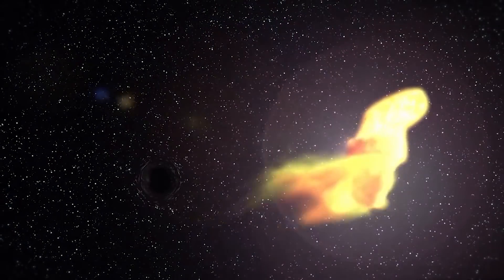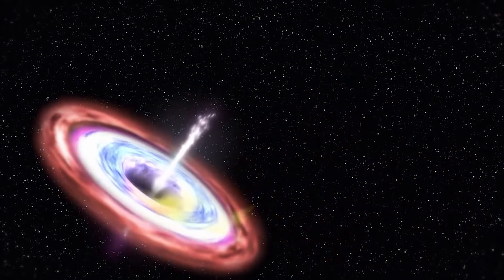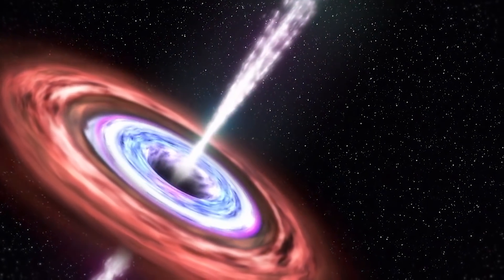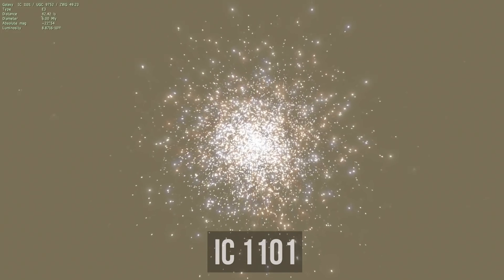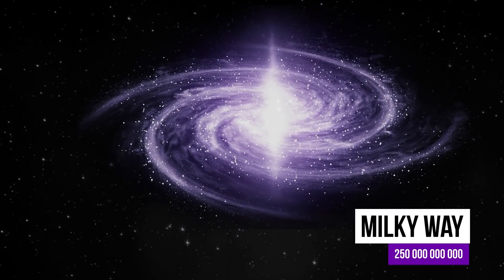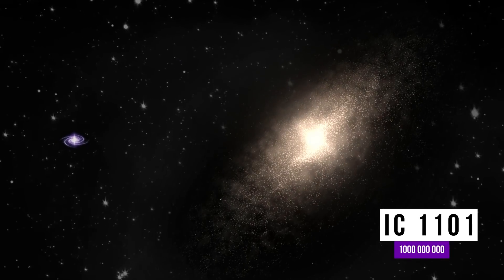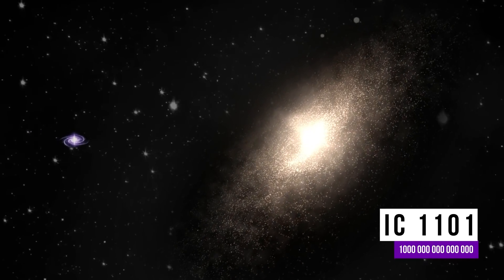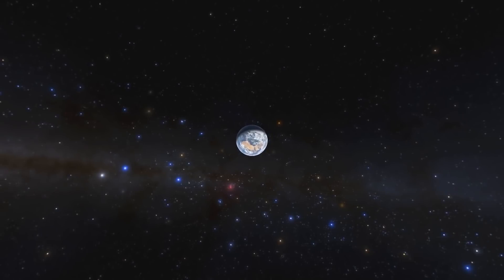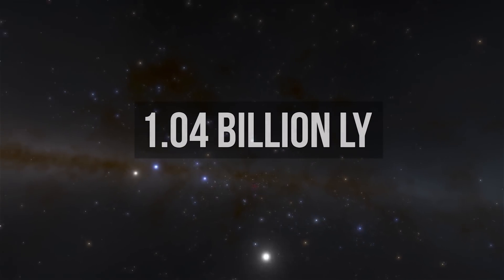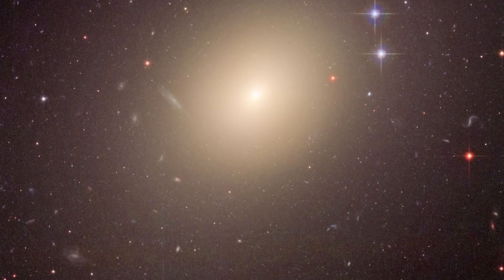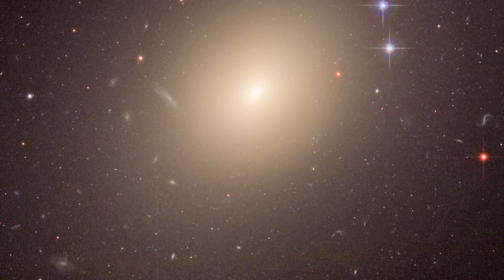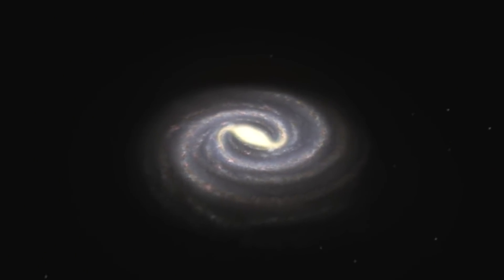When black holes suck up everything they need on the way, they form huge funnels that in turn form entire galaxies. IC 1101 is a supergiant elliptical galaxy. There are about 250 billion stars in the Milky Way—well, in IC 1101 alone there are 1,000 trillion of them. The galaxy lies 1.04 billion light years away from Earth in the constellation of Virgo. Quite possibly this is the most giant known galaxy, but can we really be sure if we still can't reach a general agreement on the size of our own Milky Way?